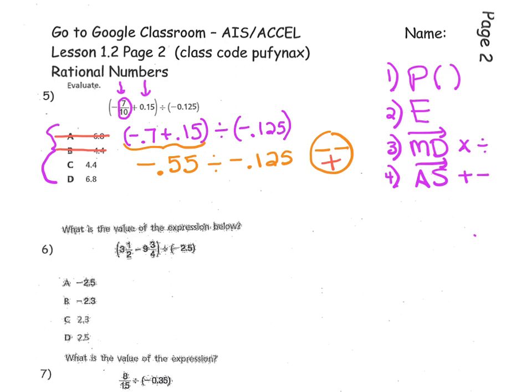For the moment, let's move on to problem number six. Once again, problem number six asks us to find the value of the expression. We have parentheses and we have divided by negative 2.5. Check out the answers. All of our answers are in decimal form.